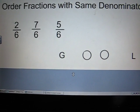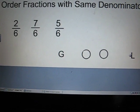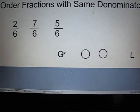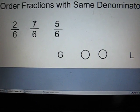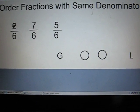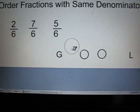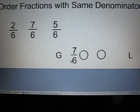So let's go from greatest to least. Which one has the most pieces shaded in? 5, 7, or 2? I hope you said 7. 7 sixths has the most pieces shaded in.